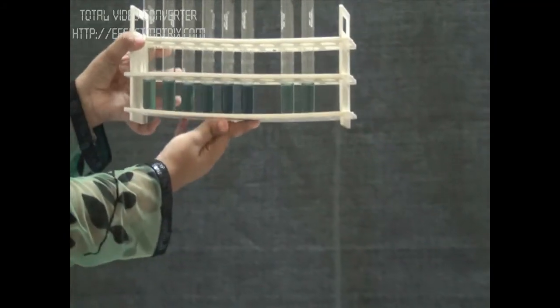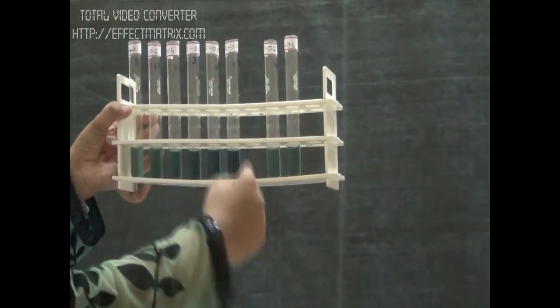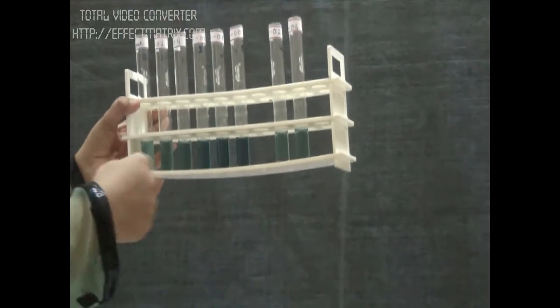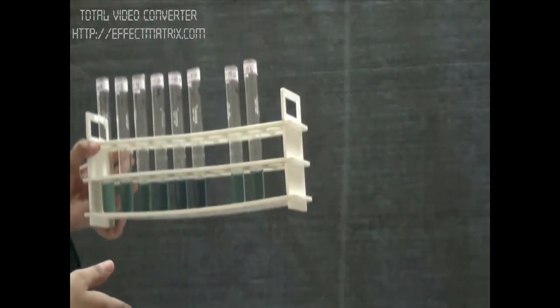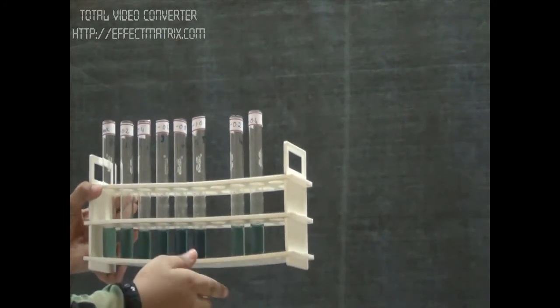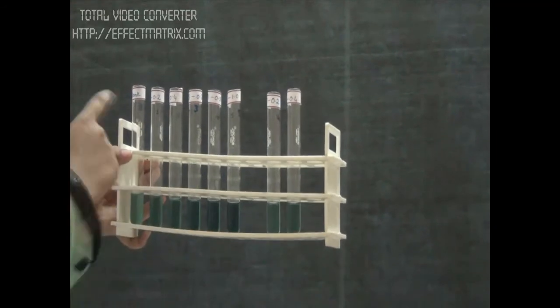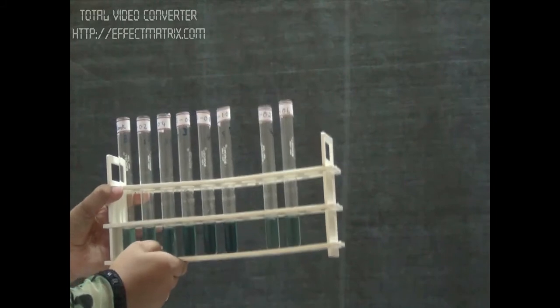So we can see after adding the arsenomolybdate reagent, we got this color. We can see that from blank to our standard 1 ml, the color intensity is increasing as we have increased the concentration of the reducing sugar. Now we take the reading of all these tubes at 620 nanometers, and by plotting the graph of standards, we can calculate the concentration of unknown solution of the reducing sugar.